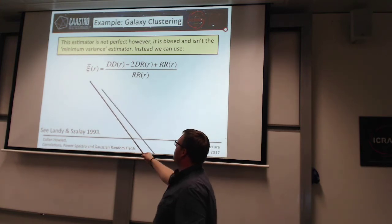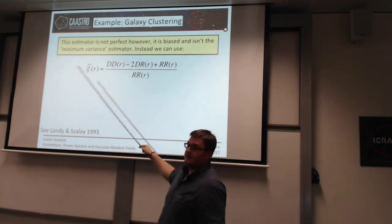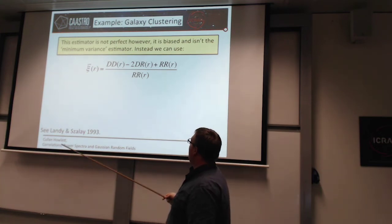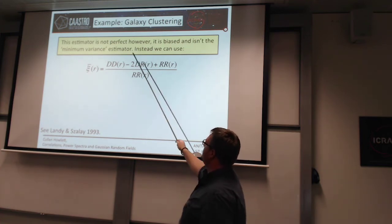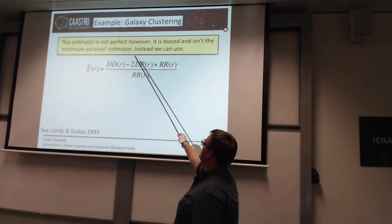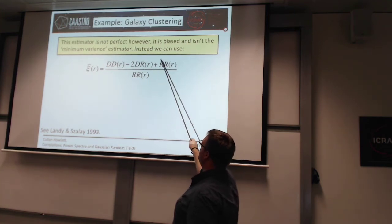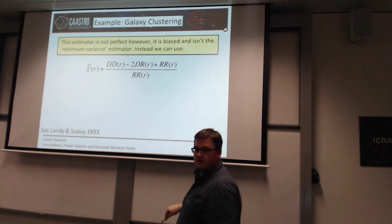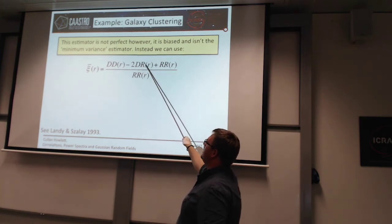The variance of this correlation function now much more accurately represents a Poisson distribution, which is what you'd expect for DD and RR counts since you're just summing over points. While the Landy-Szalay estimator may look slightly different from the previous one, all you need to consider is that this is the data-random cross-correlation, and the random-random term, which are uncorrelated. So it's not that different from DD/RR minus one, but the variance properties are much better because of this extra term.